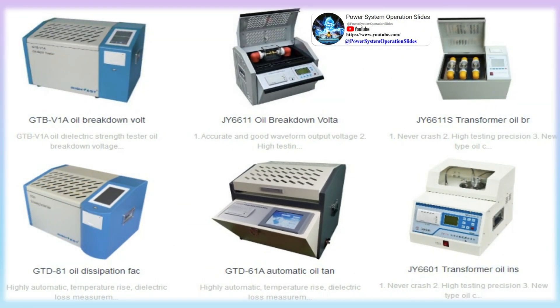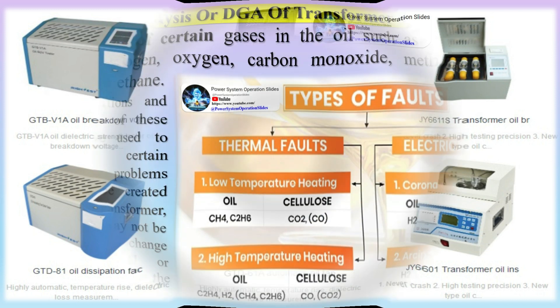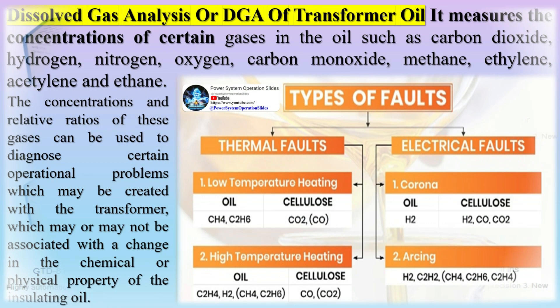Dissolved gas analysis or DGA of transformer oil measures the concentrations of certain gases in the oil, such as carbon dioxide, hydrogen, nitrogen, oxygen, carbon monoxide, methane, ethylene, acetylene, and ethane. The concentrations and relative ratios of these gases can be used to diagnose certain operational problems which may be created within the transformer, which may or may not be associated with a change in the chemical or physical property of the insulating oil.